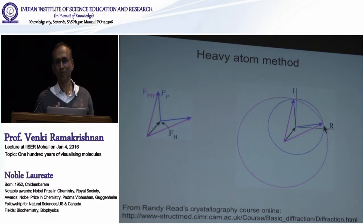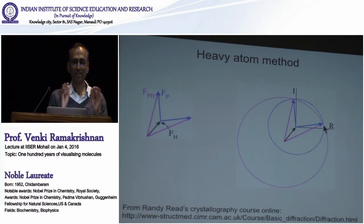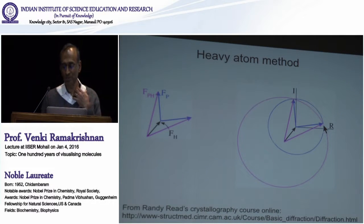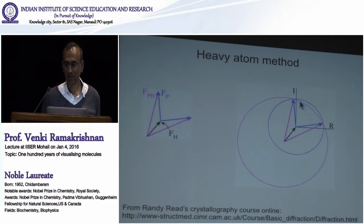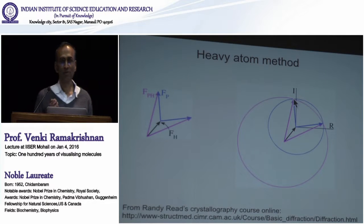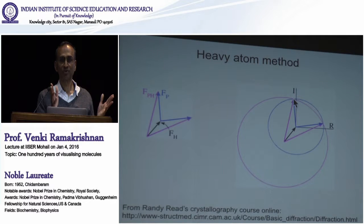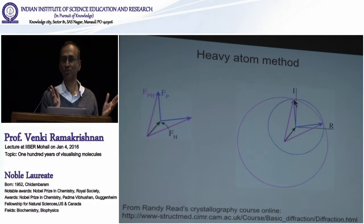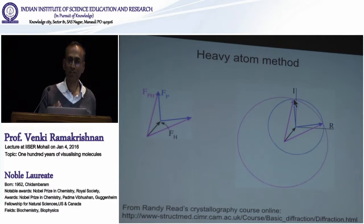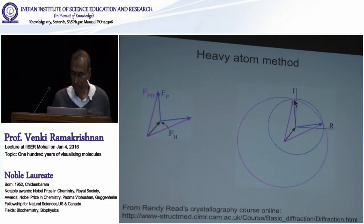In practice, because of errors, it doesn't quite work out that way and they have to calculate the probability of which is the most likely phase angle. But that's the basic principle. That allowed Perutz and Kendrew to determine the phase angle for all of the spots. There are thousands of spots when you collect data from a protein crystal, and they measured the amplitudes. From that, they were able to solve the structure of a protein.